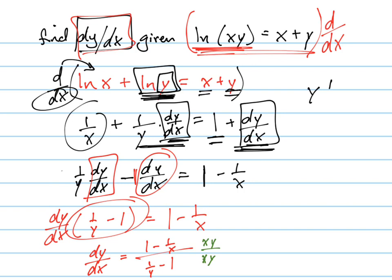And when I do that, I get, this multiplies here and gets me xy. This multiplies by here and the x's cancel. So I just get minus y all over. This multiplies here and the y's cancel. So I just get x. And this multiplies by here and I get minus xy. So that's your answer.